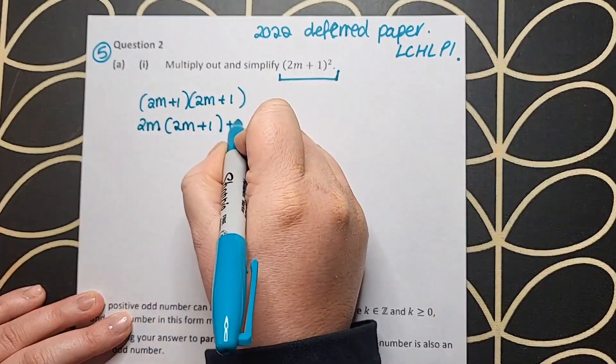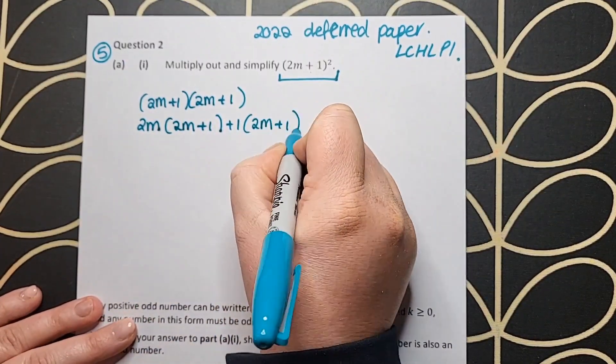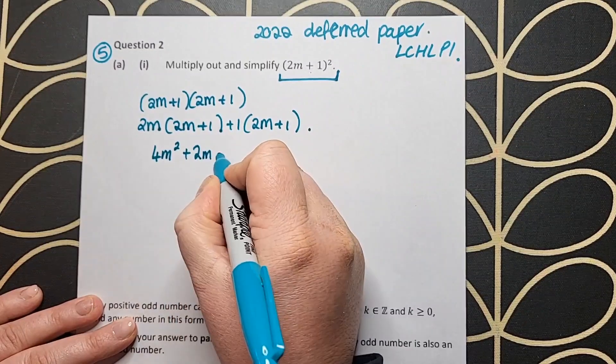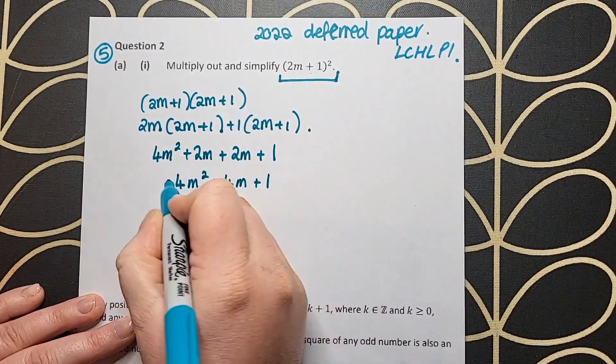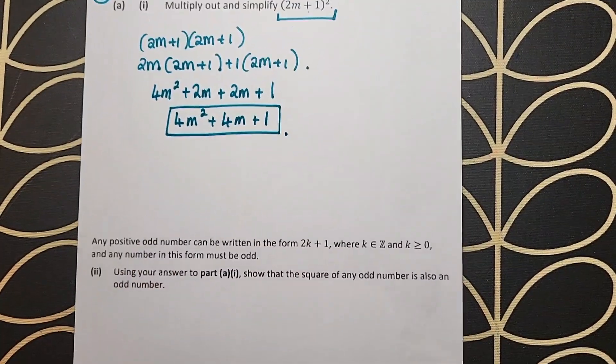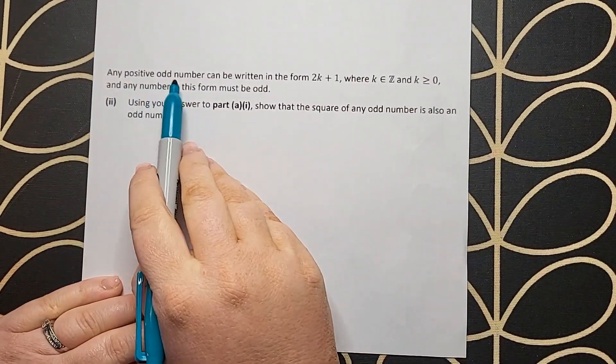I'm just working through every single step here. I take the two brackets and I break up the first bracket multiplied by the second, and I get 4m squared plus 4m plus 1. Nice little 5 marks there. Lovely.